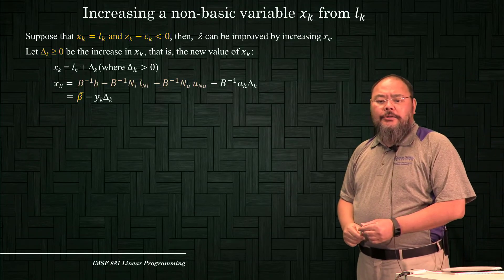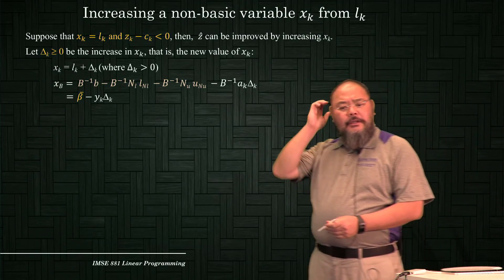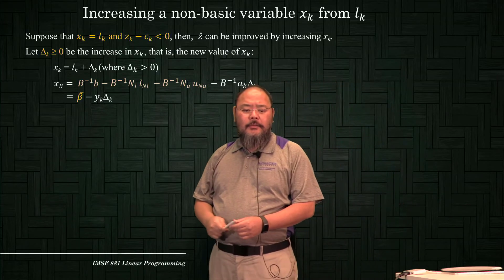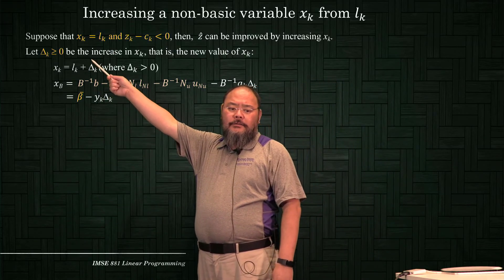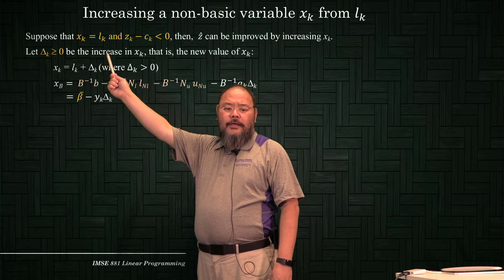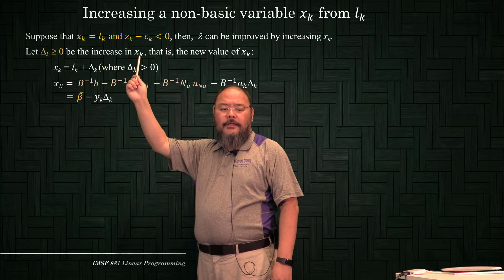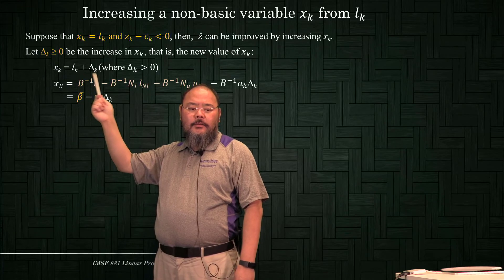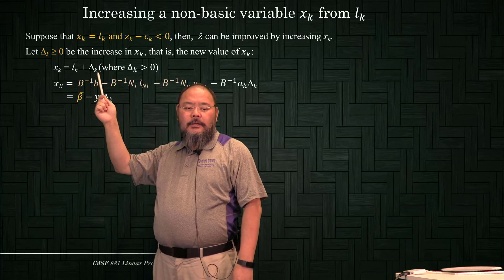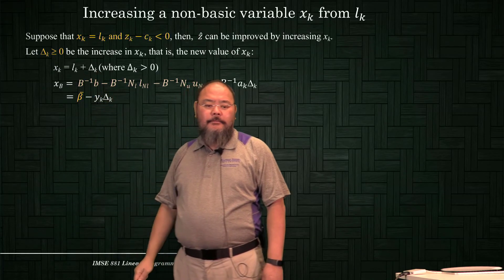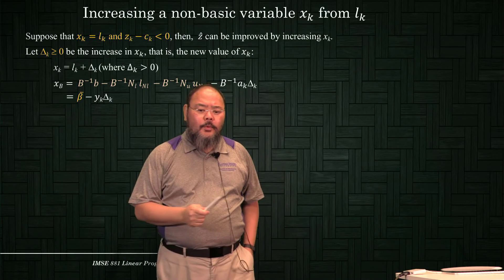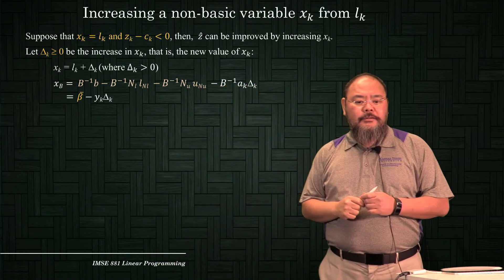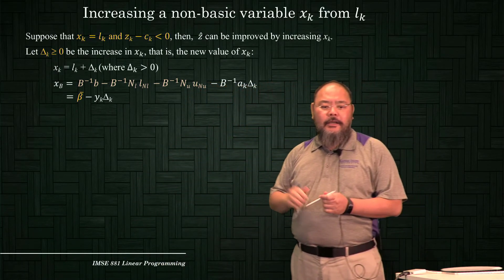We're going to try using the change of the current value of the non-basic variable. We'll call delta_k the change — the increase of xk. So xk, currently at the lower bound, is increased by delta_k. We're going to find out what is the best or maximum delta_k it can achieve.